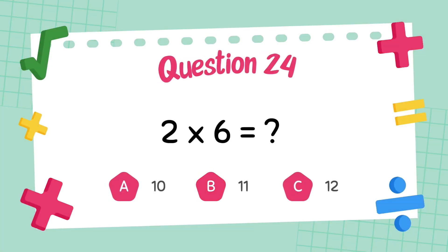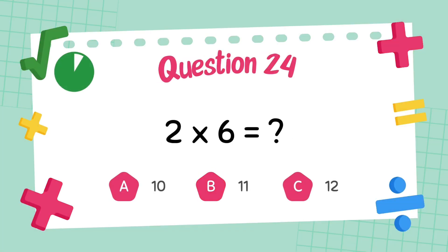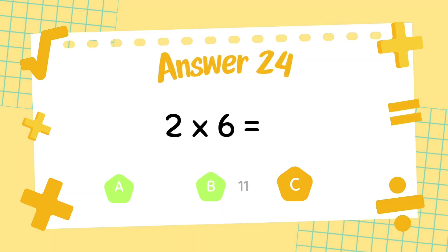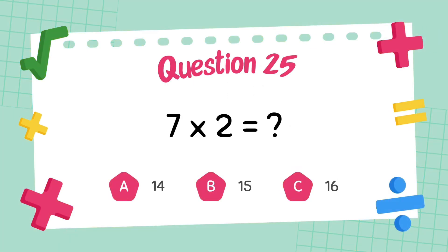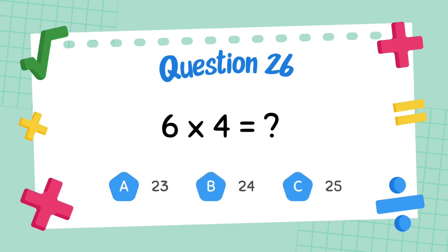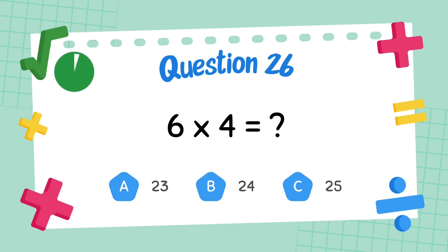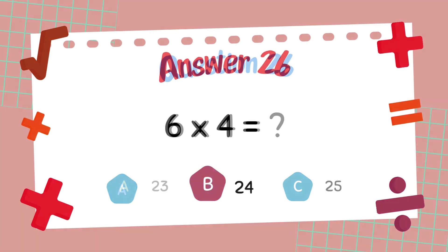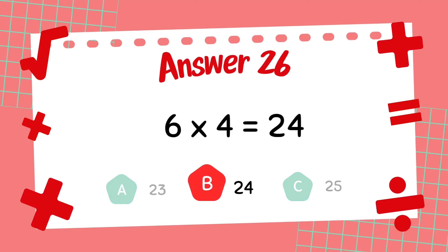What is 2 multiply 6? The answer is 12. What is 7 multiply 2? The answer is 14. What is 6 multiply 4? The answer is 24.